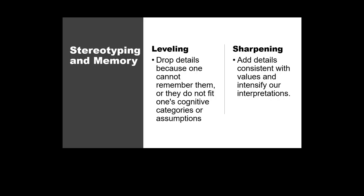We also stereotype, and as mentioned before, our memory has an impact on our stereotypes and perspectives. One way this affects us is through leveling, where we forget details and only focus on certain aspects, creating sets of assumptions and categories in our minds. Or it can do the opposite, where certain aspects are intensified in our interpretations and perceptions of our surroundings.